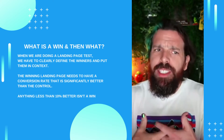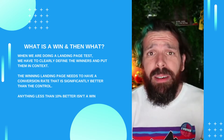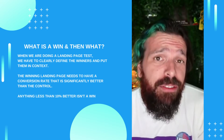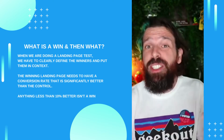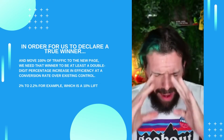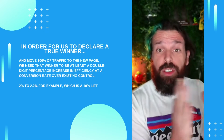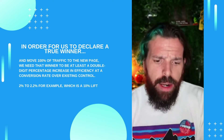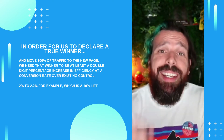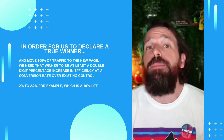Think about all the downstream impacts: the testing time, money, and dev work that goes into each marginal change — changes that might have as much to do with seasonality or ad effectiveness as with the landing page itself. To declare a true winner and move 100 percent of our traffic to a new landing page, we need a double-digit percentage increase in conversion rate efficiency over the control. For instance, a conversion rate going from 2 percent to 2.2 percent is a 10 percent lift — that's the threshold.